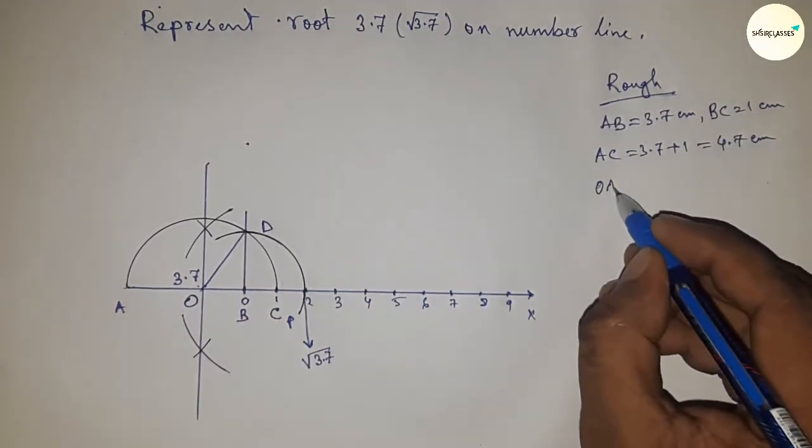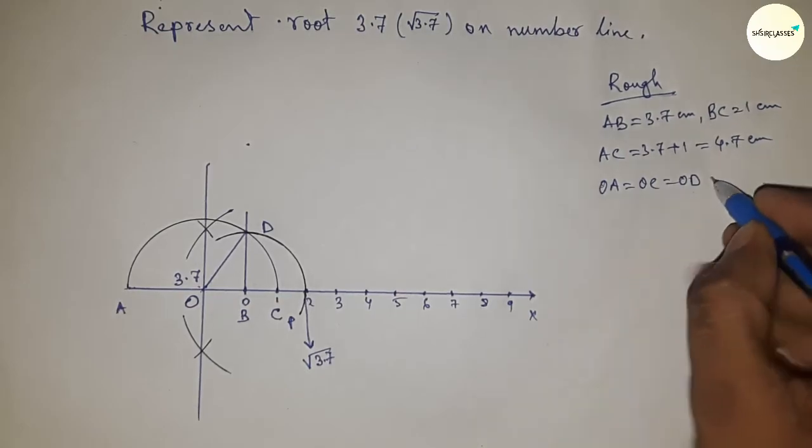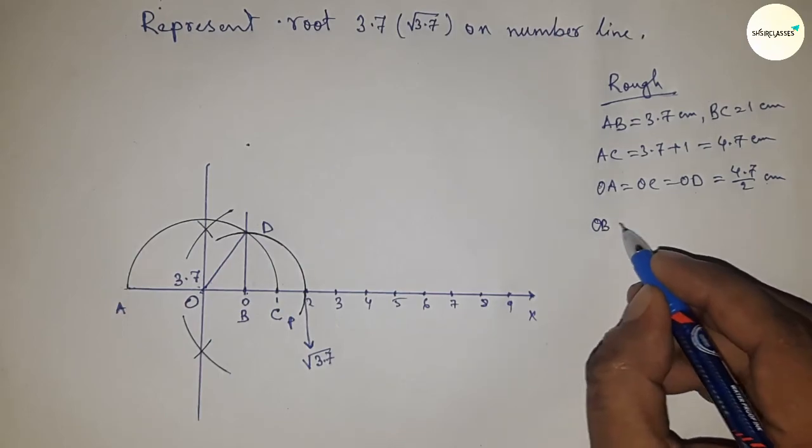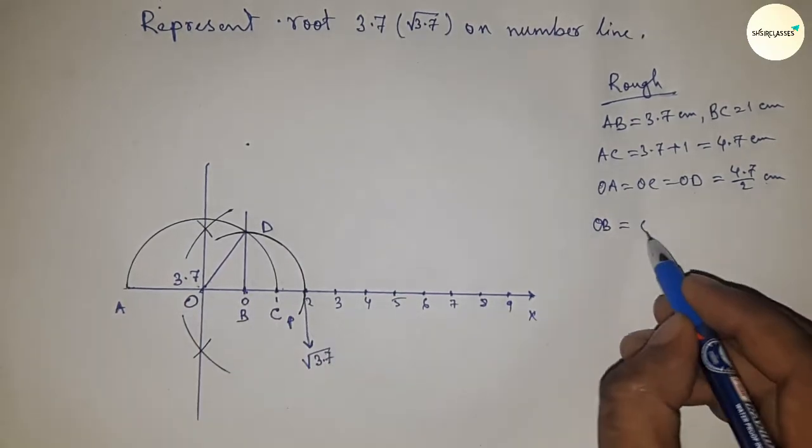Next, the radius OA, OC, and OD, we can write 4.7 by 2 centimeter. Next, OB equal to we can write OC minus BC.